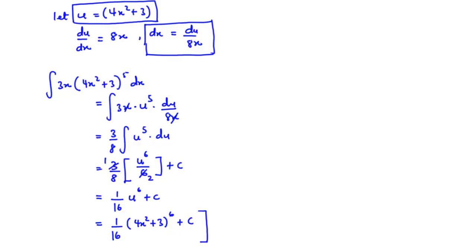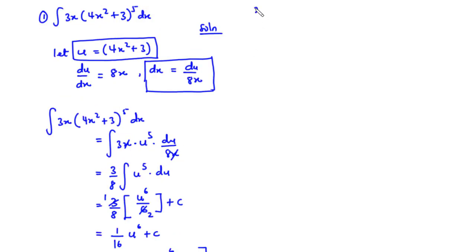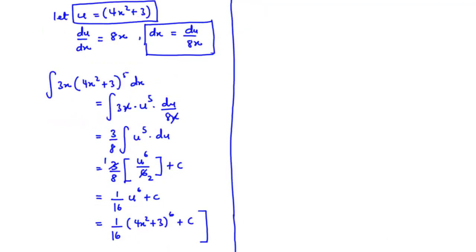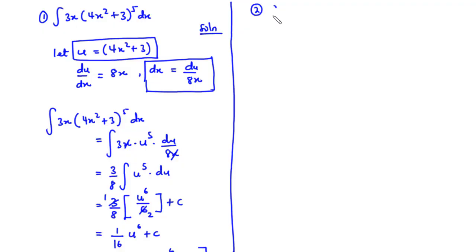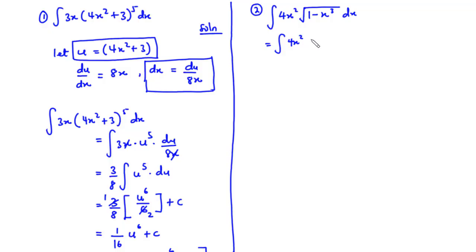Now let's move on to example 2. For example 2, we are going to find the integral of the function 4x squared times the square root of (1 minus x cubed) dx. This can also be expressed as the integral of 4x squared times (1 minus x cubed) raised to the power 1/2.